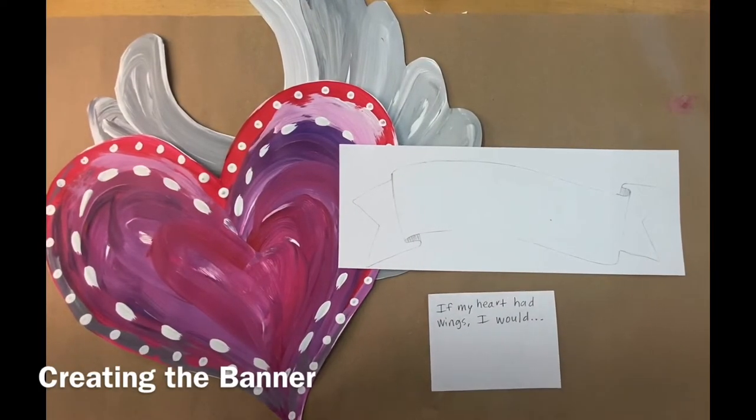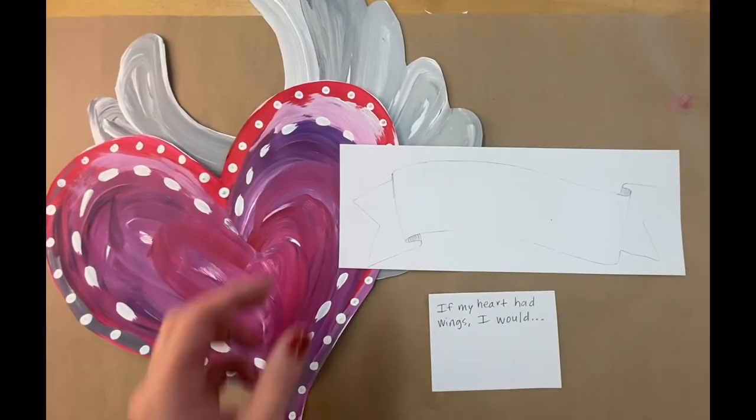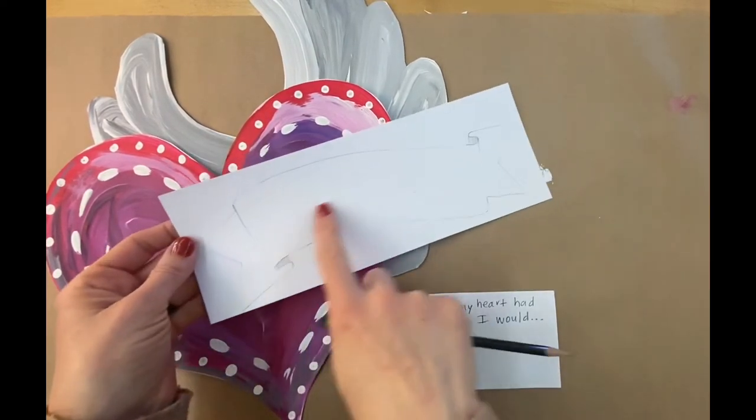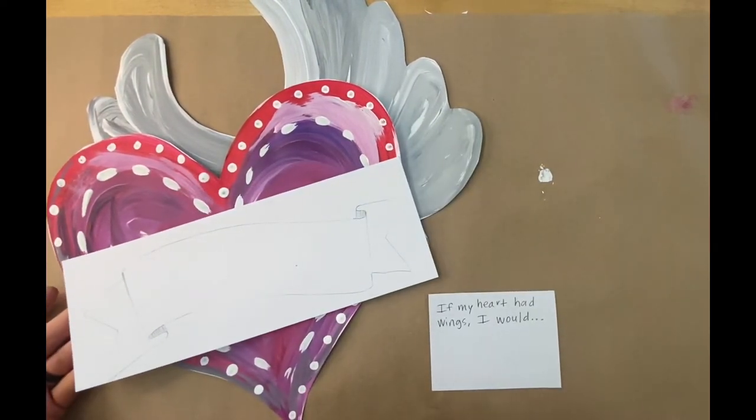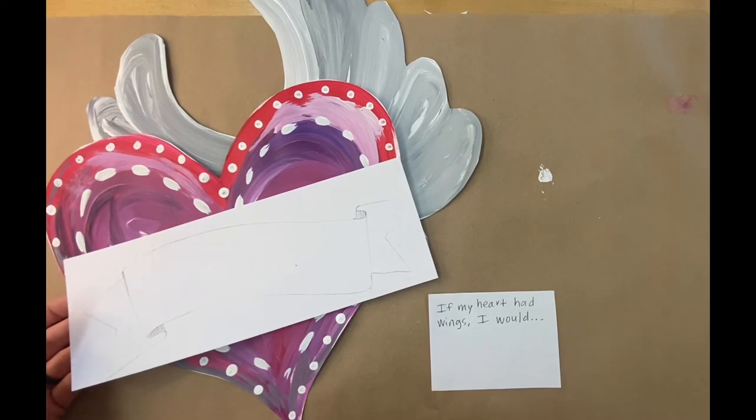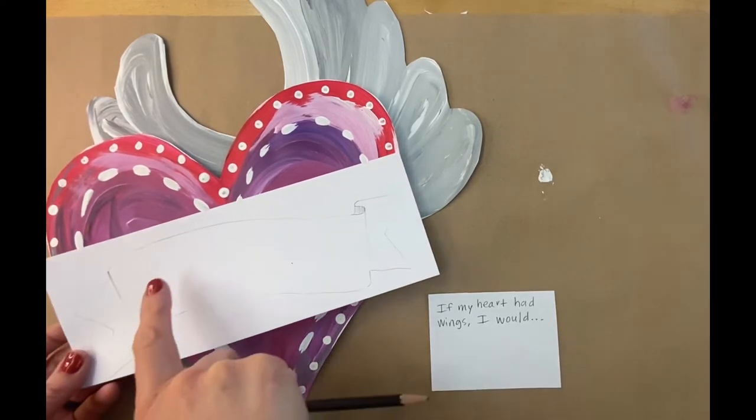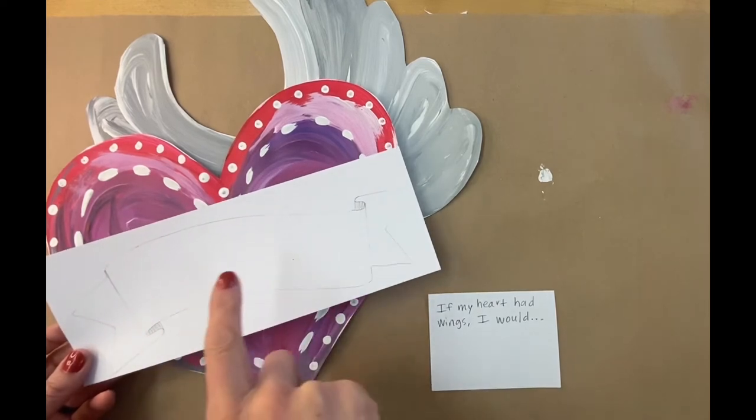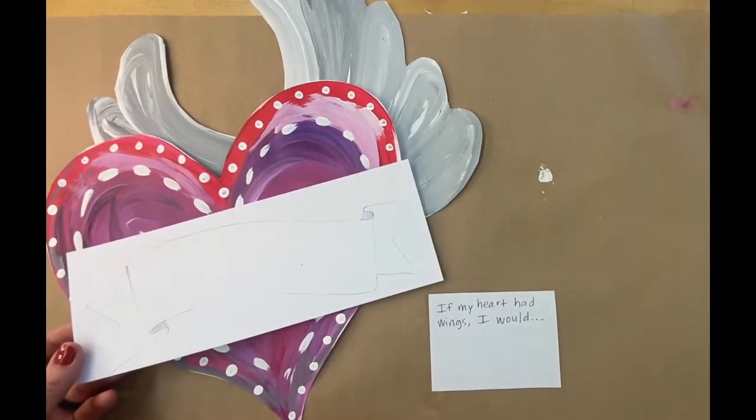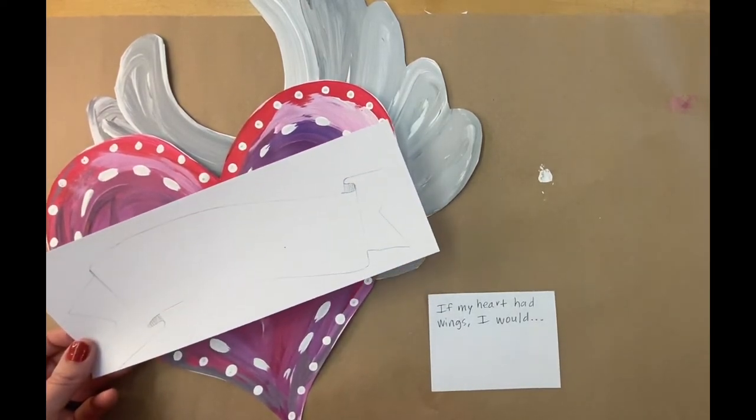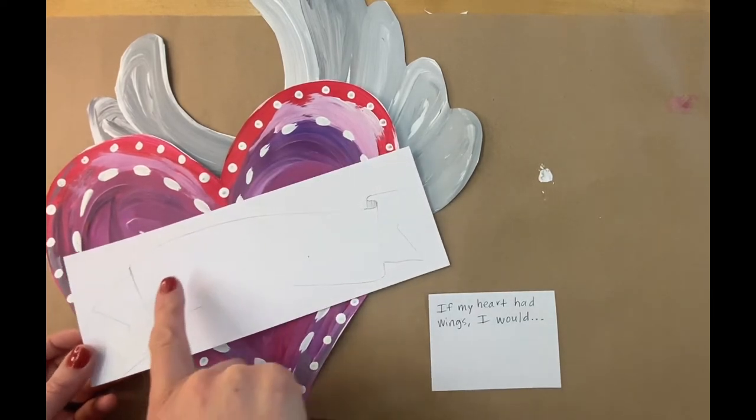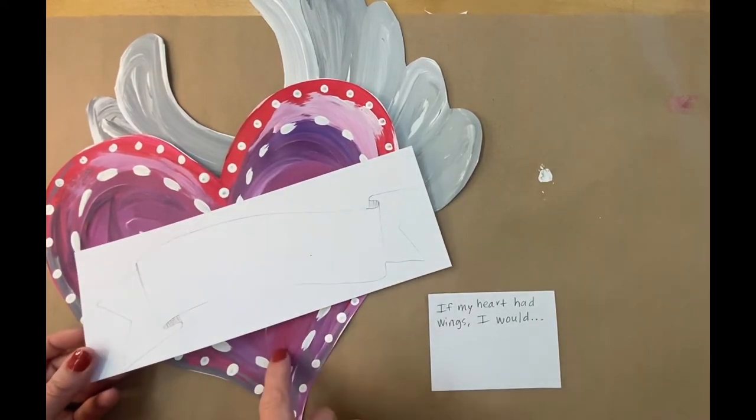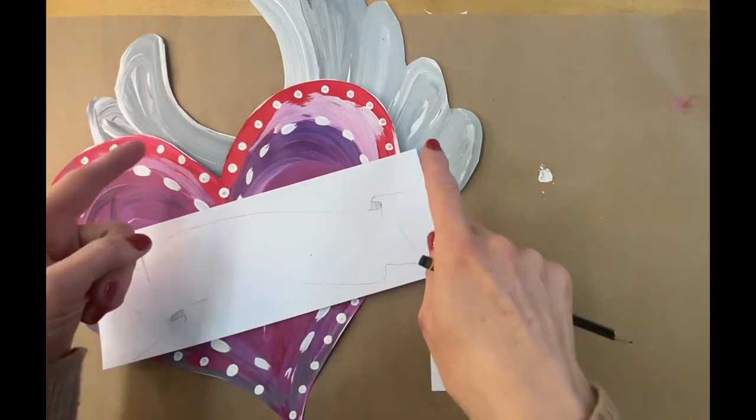Now that our hearts and wings are cut out, we're going to be thinking about what we're going to write on the banner that's going to go across the heart. These are going to be displayed in the hallway, and it would be really neat to see what kind of kindness do you want to share with the world, or what do you want to share with the world from your heart if it could have wings and fly to someone else.